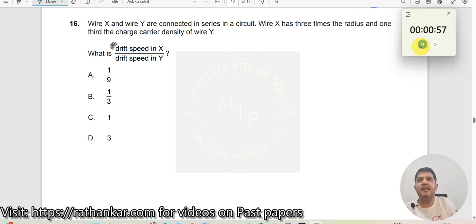Question number 16. Wire X and Y are connected in series with the circuit. Wire X has three times the radius, this is more thicker.